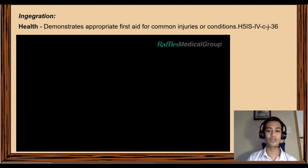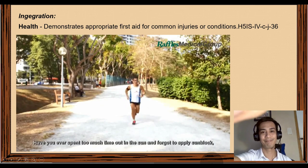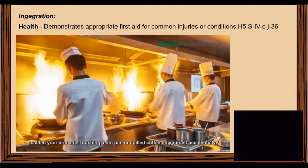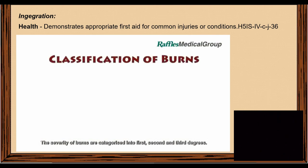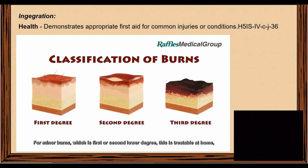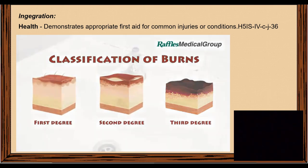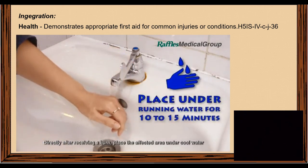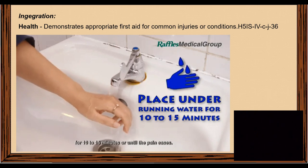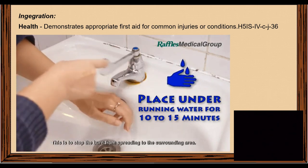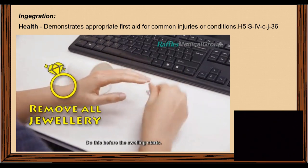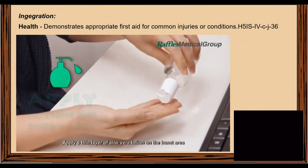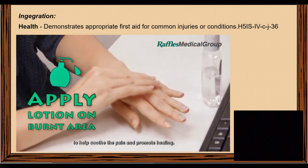For integration with Health, we will watch a video about first aid for common injuries. Have you ever scalded your arm after touching a hot pan or spilled coffee on yourself? The severity of burns is categorized into first, second, and third degrees. For minor burns, treatable at home: place the affected area under cool running water for 10 to 15 minutes or until the pain eases, to stop the burn from spreading. Remove rings or tight jewelry from the affected area before swelling starts. Apply a thin layer of aloe vera lotion to soothe the pain and promote healing.